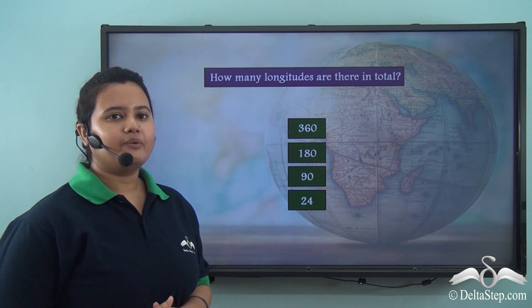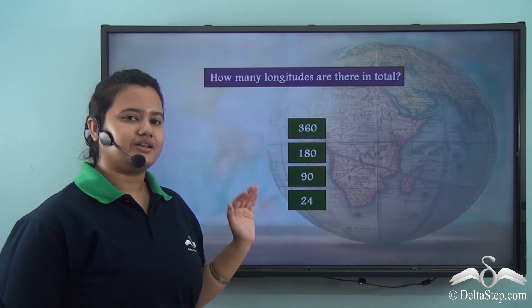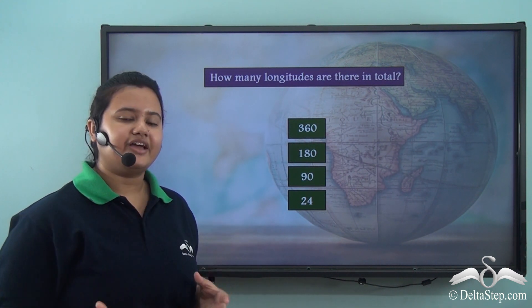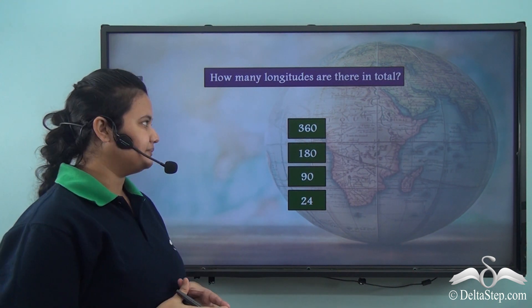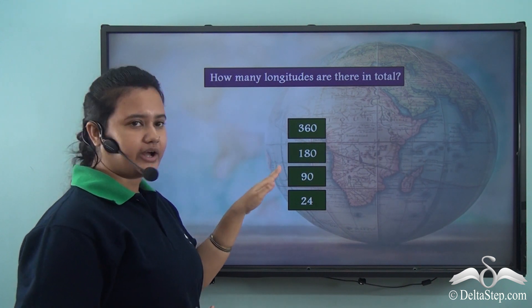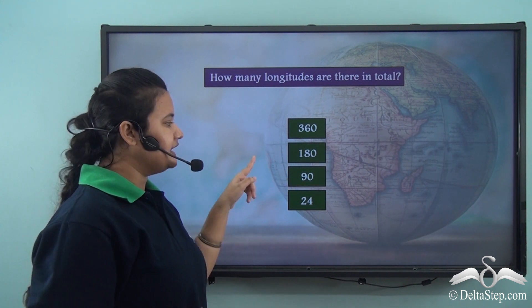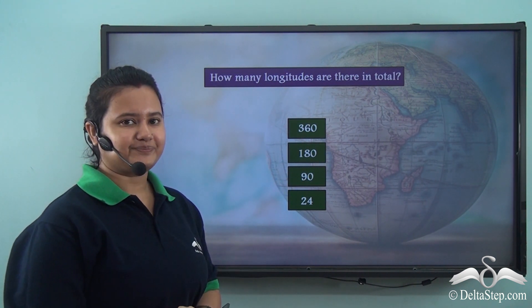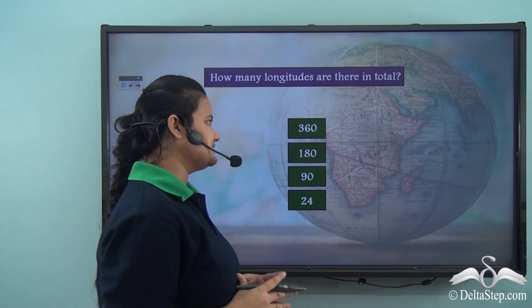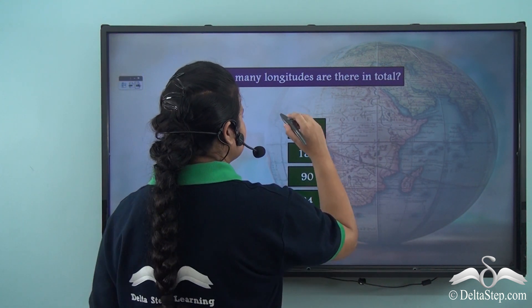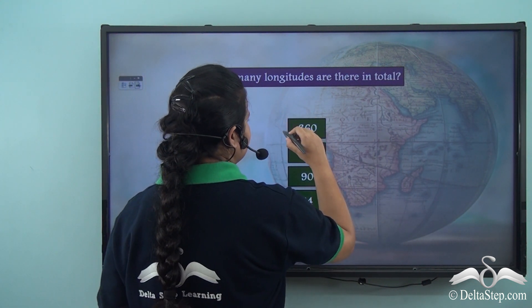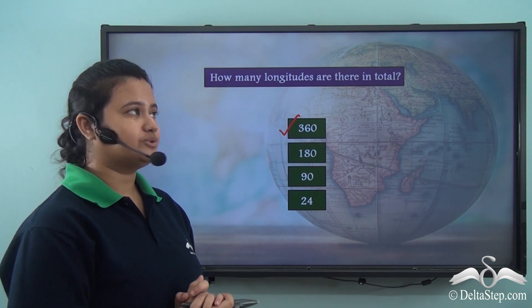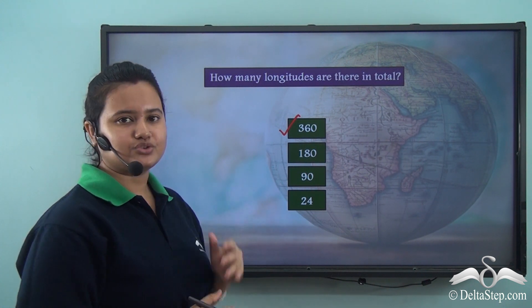So now, can you help answer this question: how many longitudes are there in total? Is it 360, 180, 90, or 24? Yes, the correct answer is 360. So there are 360 lines of longitudes in total.